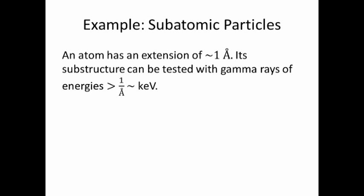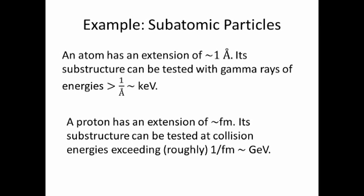Another example: subatomic particles. An atom has an extension of about one angstrom. Its substructure can be tested with gamma rays of energies exceeding the inverse of an angstrom which is about a kiloelectron volt. A proton has an extension of about a fermi. Its substructure can be tested at collision energies exceeding roughly the inverse of a fermi which is something like a gigaelectron volt.